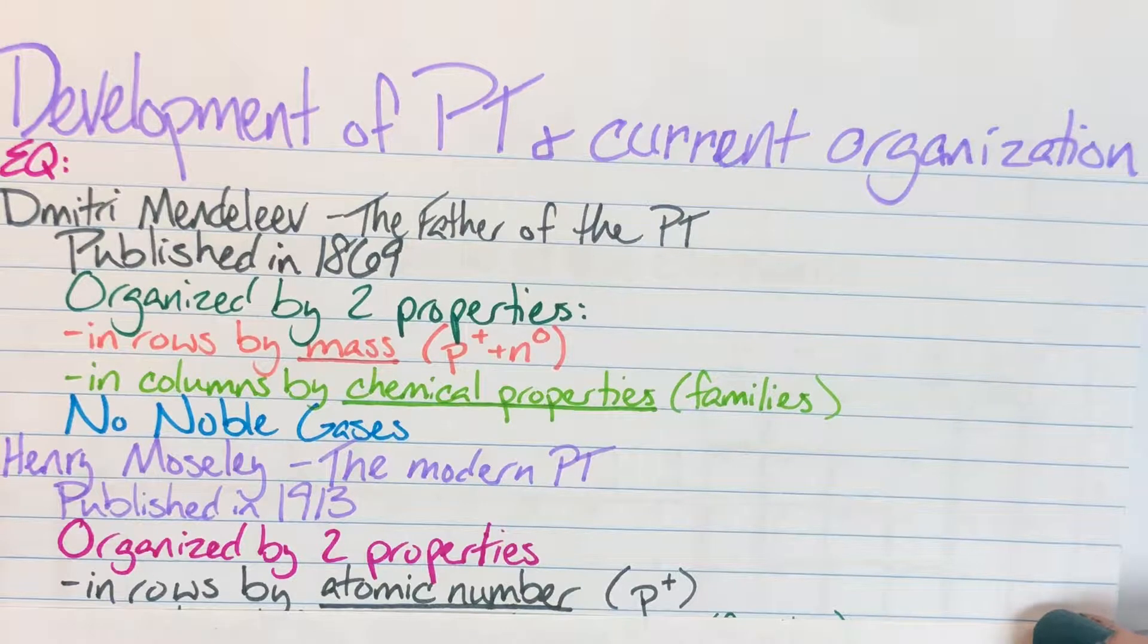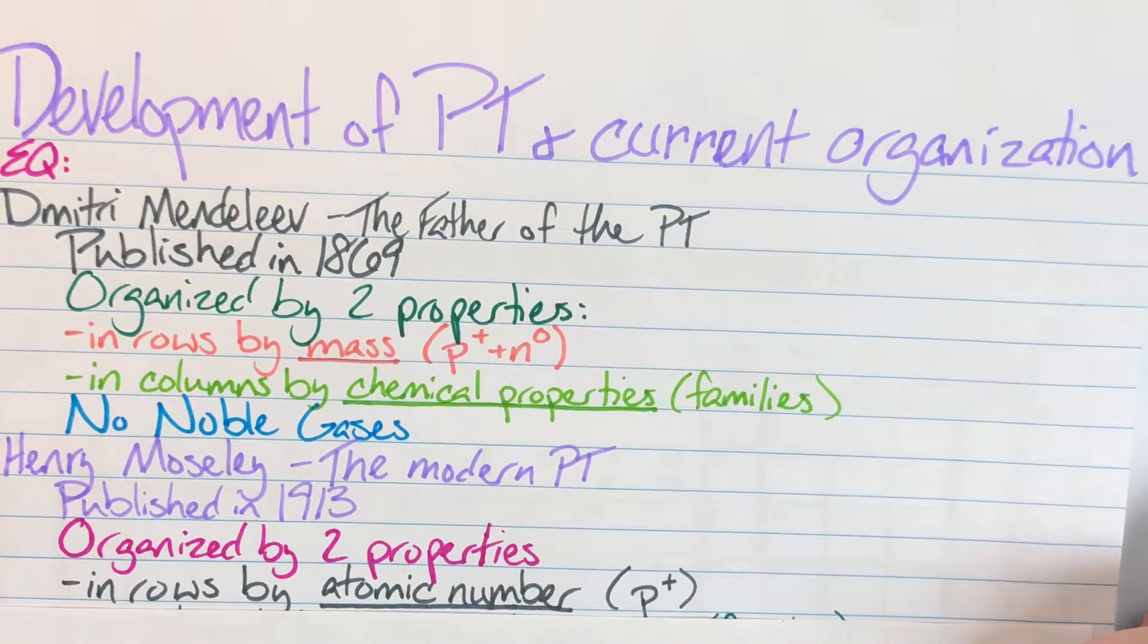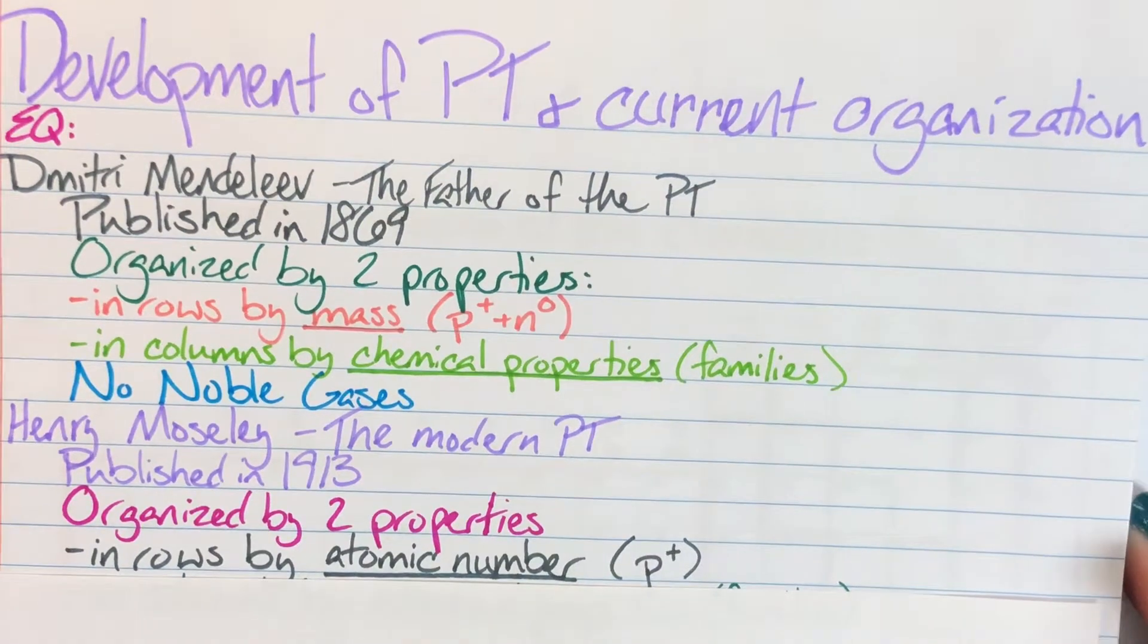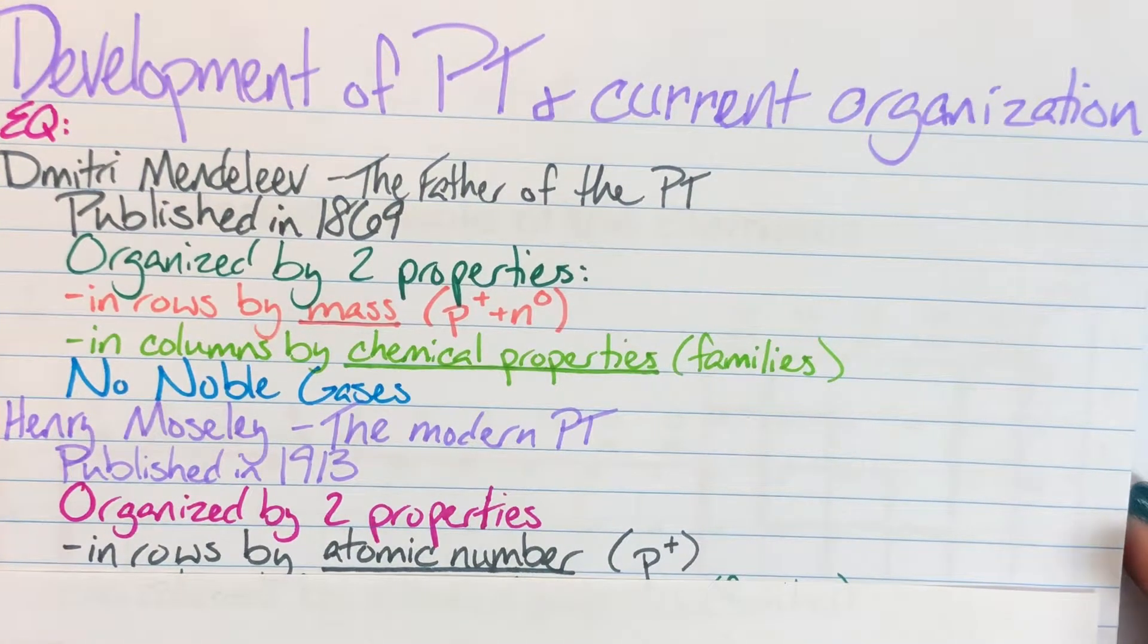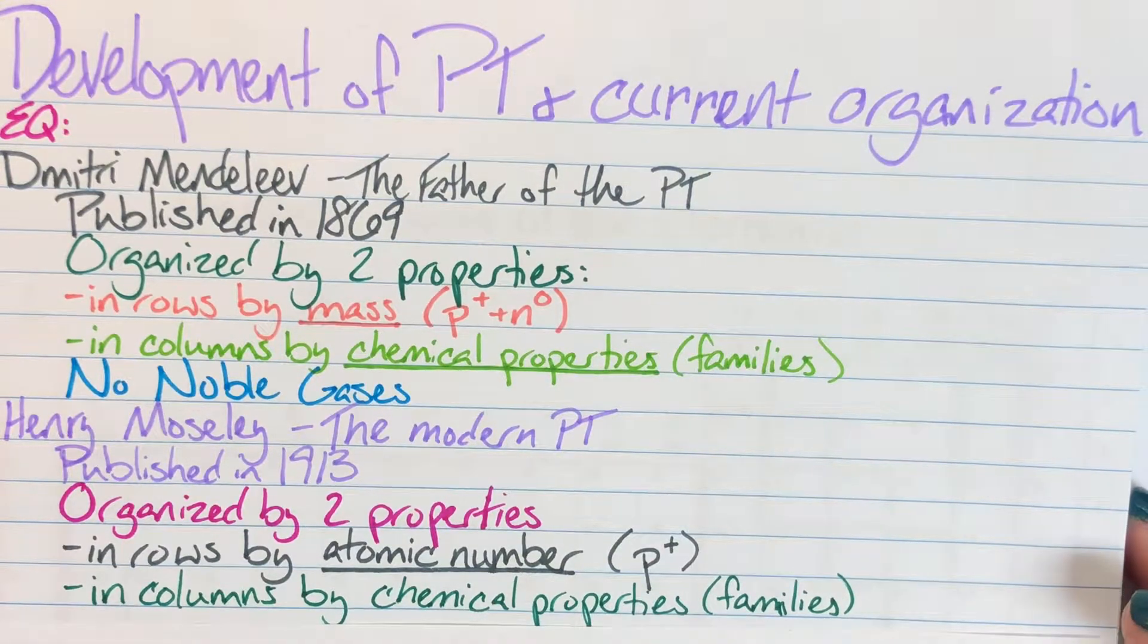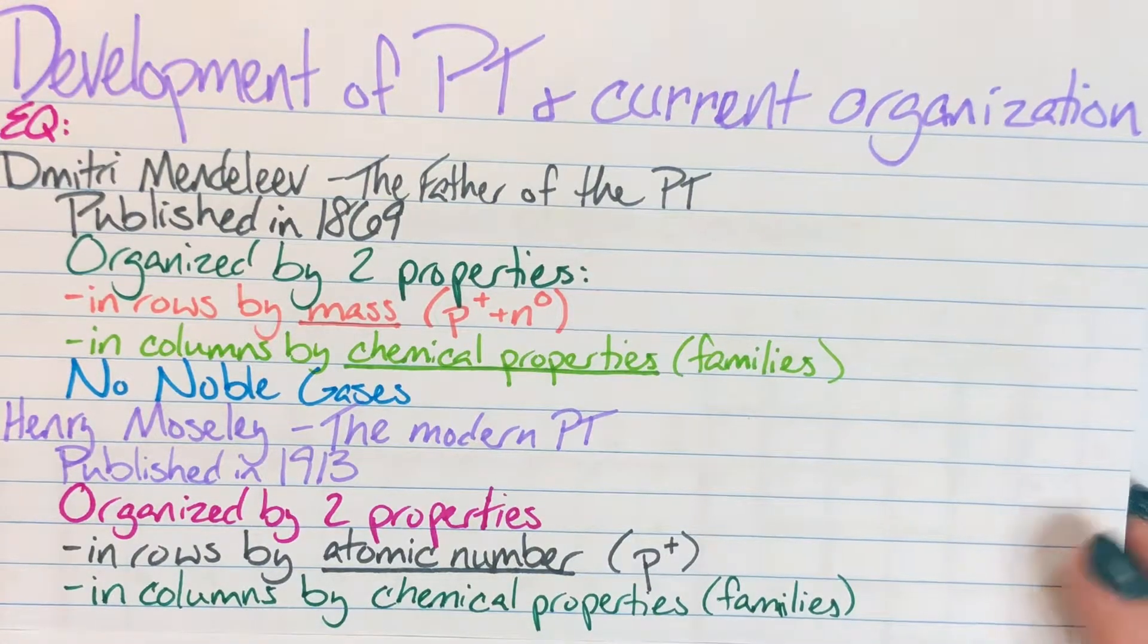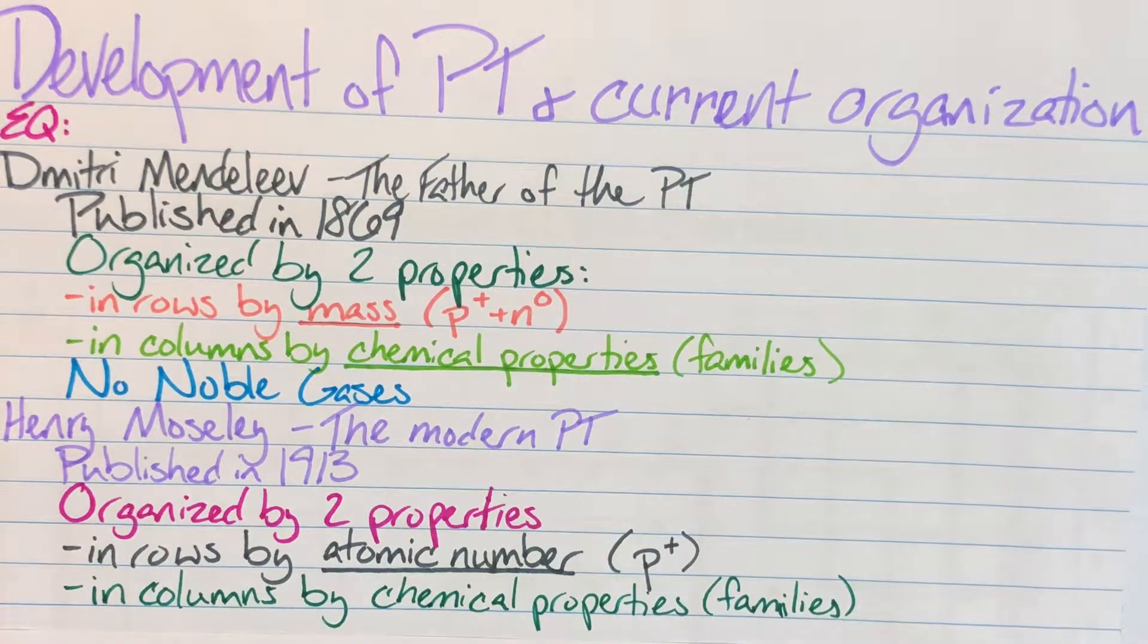His rows instead of being organized by mass were organized by atomic number which is just my number of protons. His columns were the same though in that they were organized by chemical properties. Now we refer to them as families.